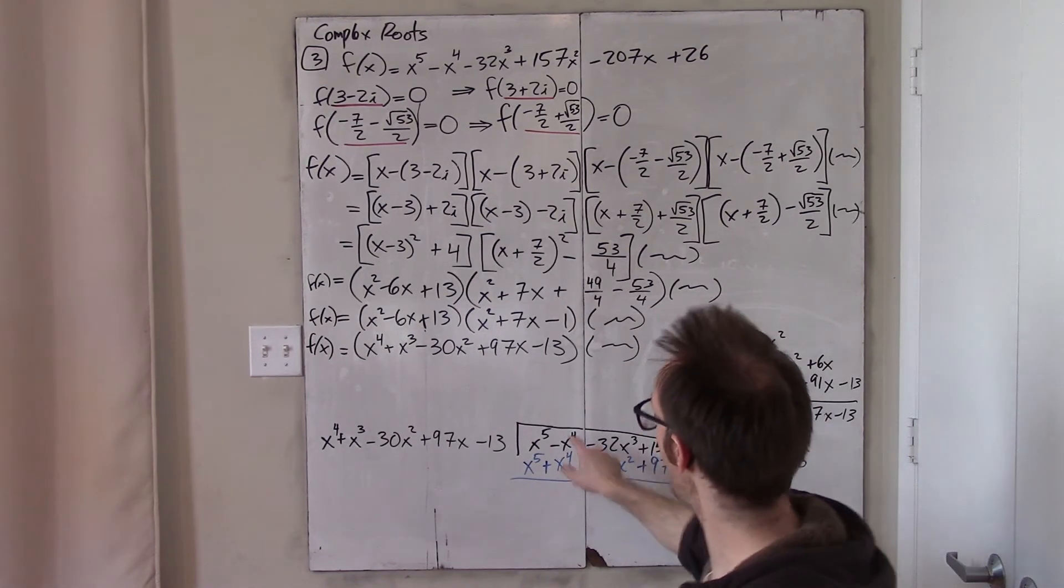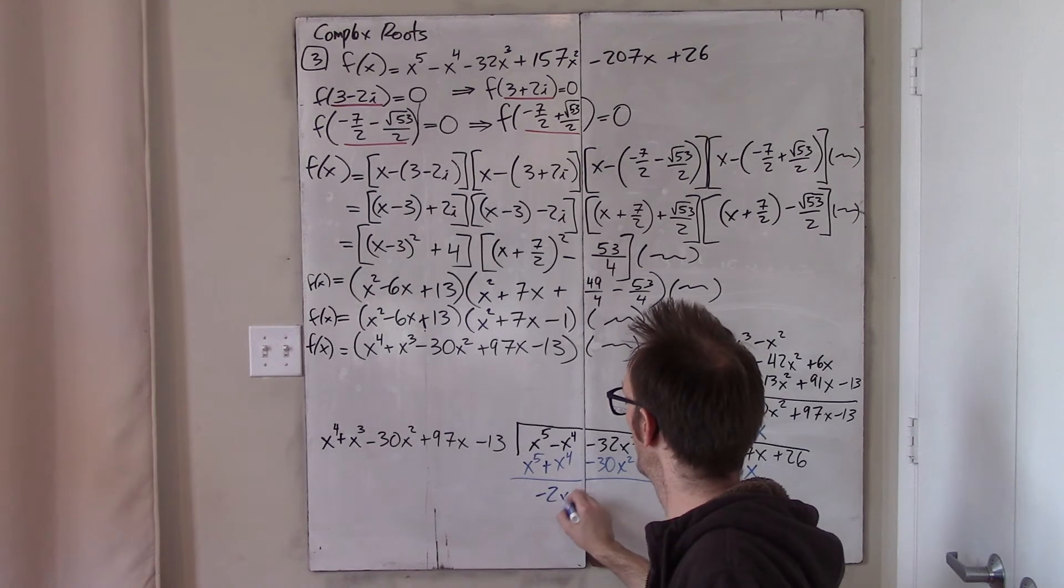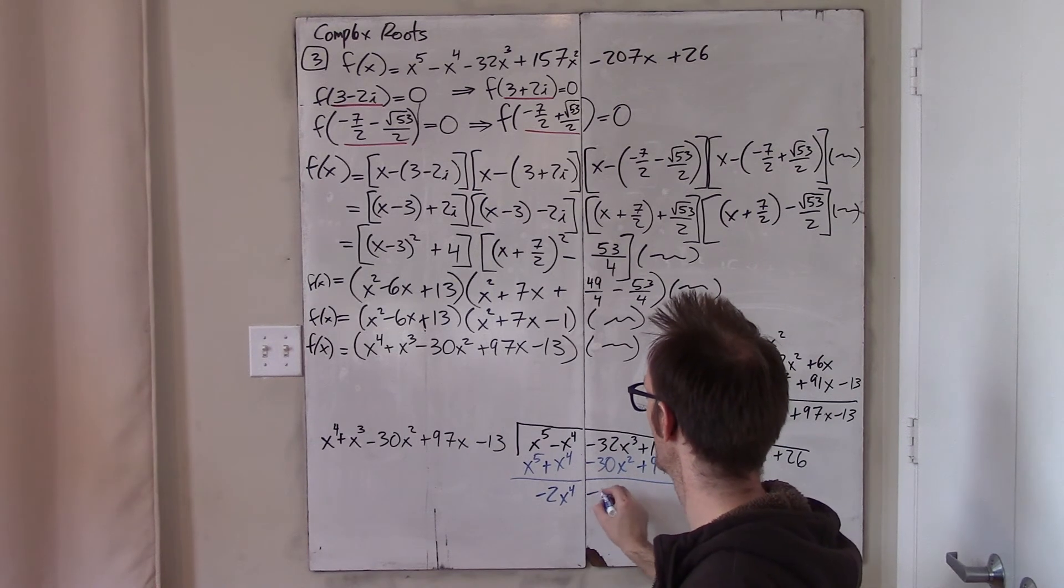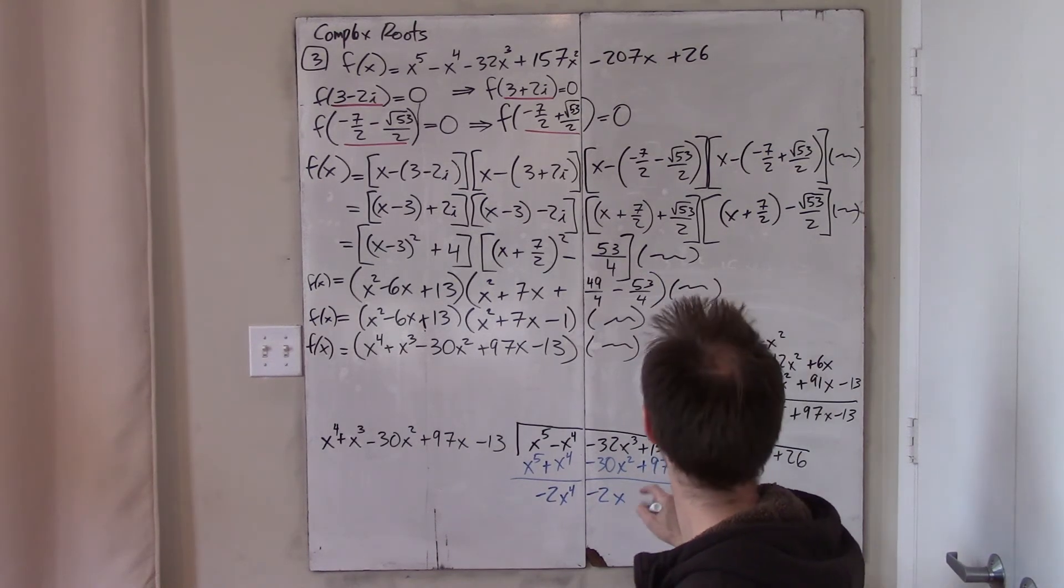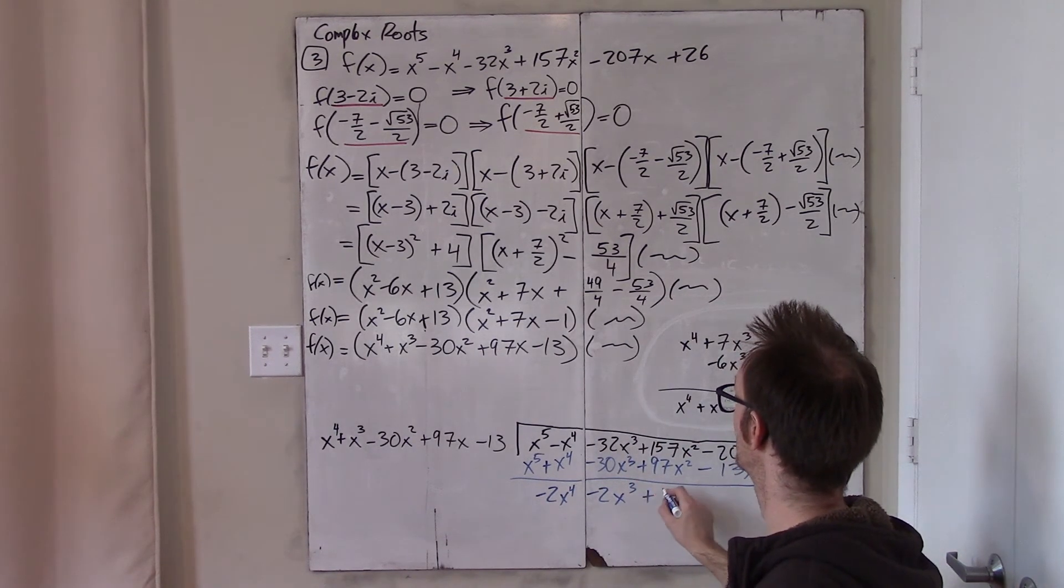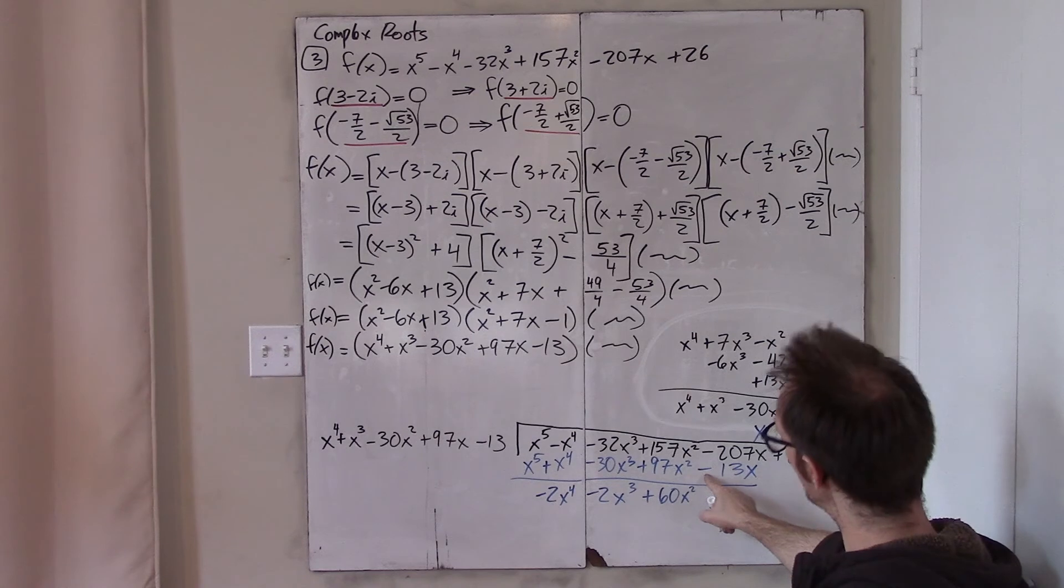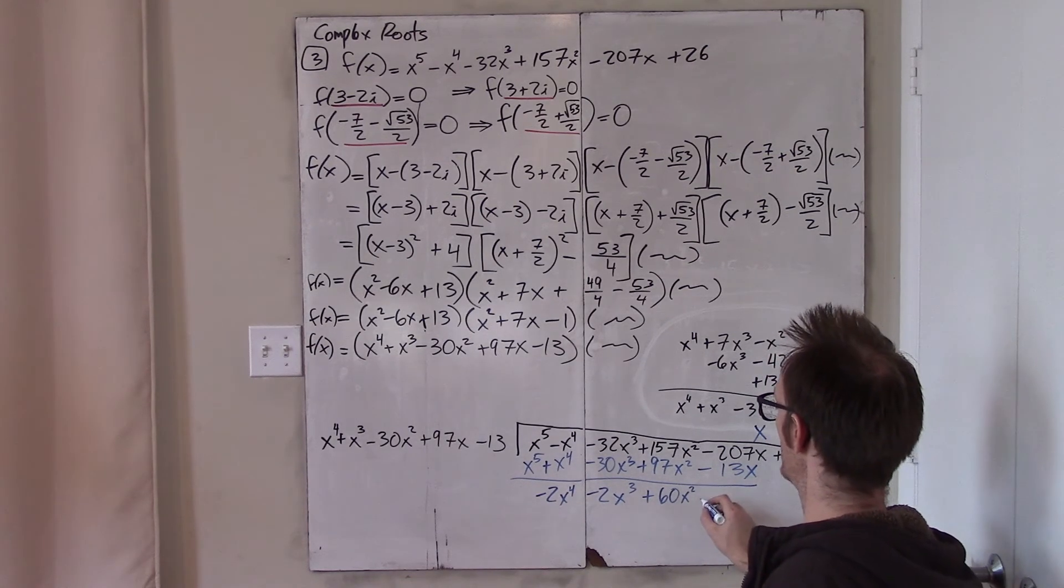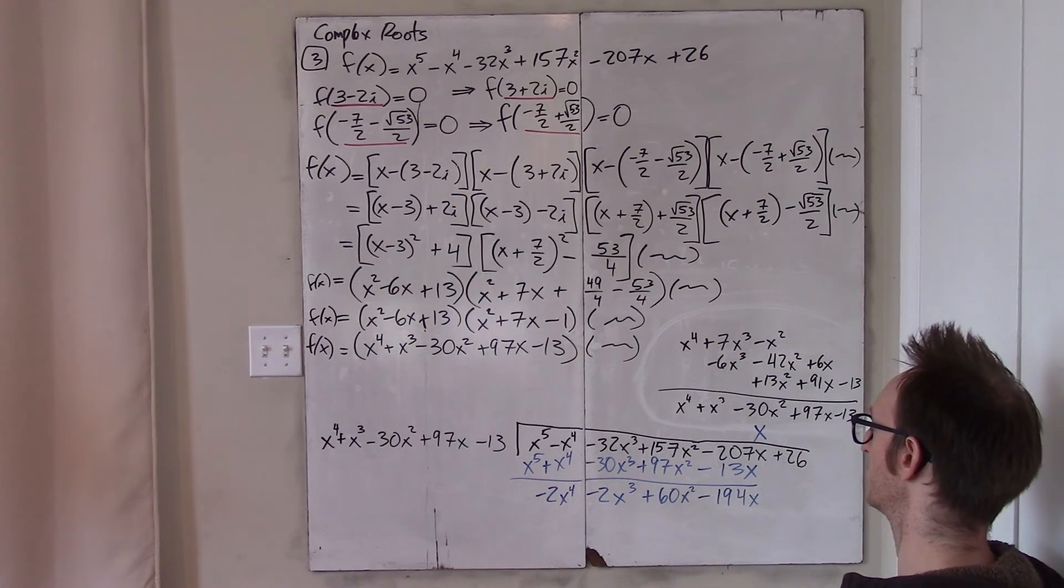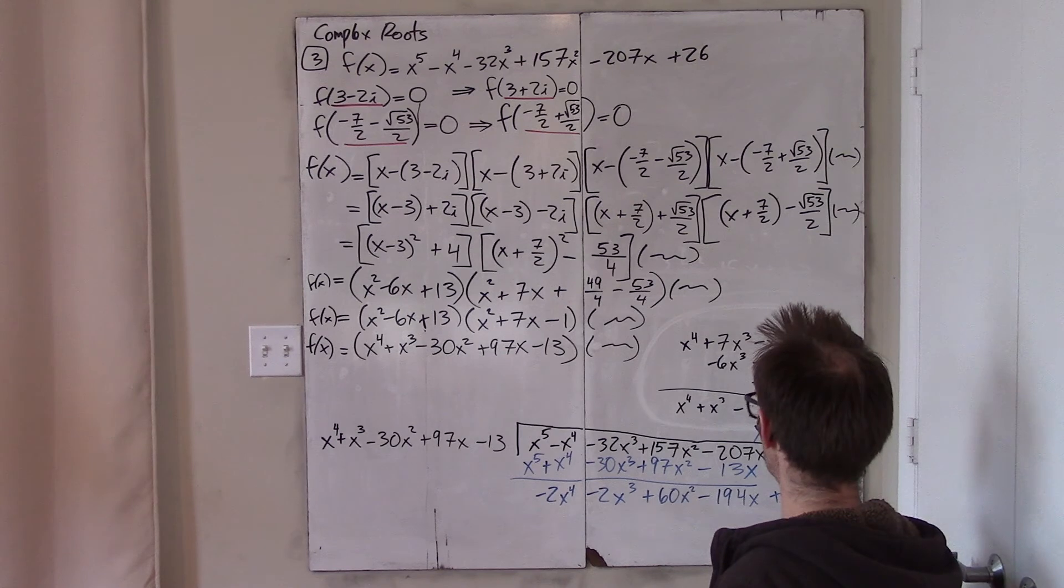Now, we subtract. So negative 1 minus negative 1 is negative 2x to the fourth. Here we get, minus negative 30. So, it's like plus 30. So, it's also minus 2x. Jeez. That should be cubed. Now this is plus 60x squared. 157 minus 97. Negative 207 minus negative 13. So, that's like plus 13. So, that's like minus 194. I think that's right. Minus negative 30 is just plus 13. Sure. Because 7 and 6. Yeah. And then I bring down the 26. All right.